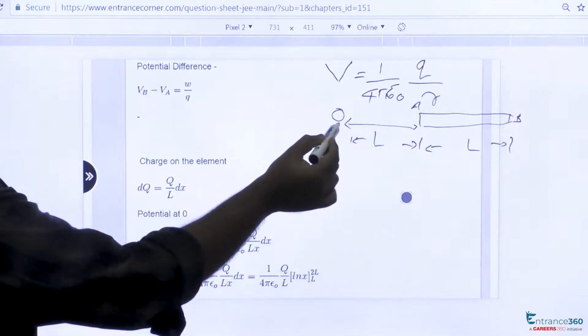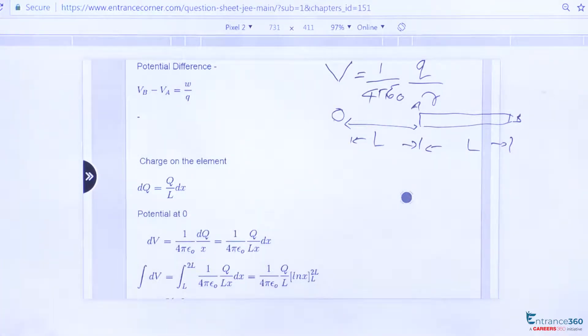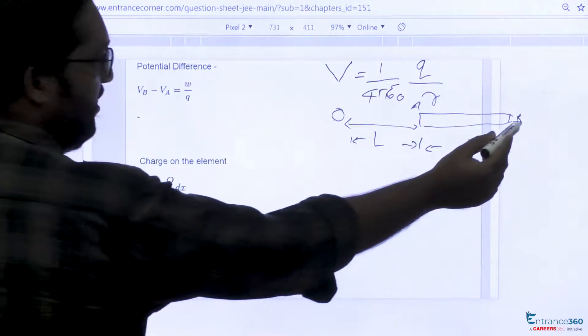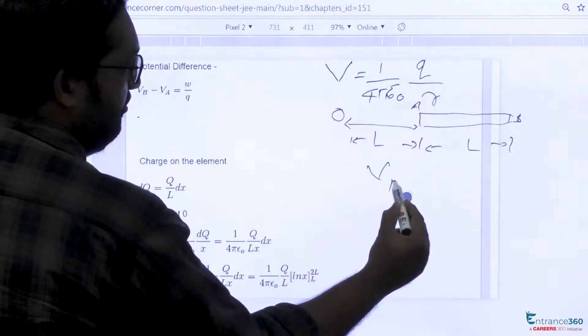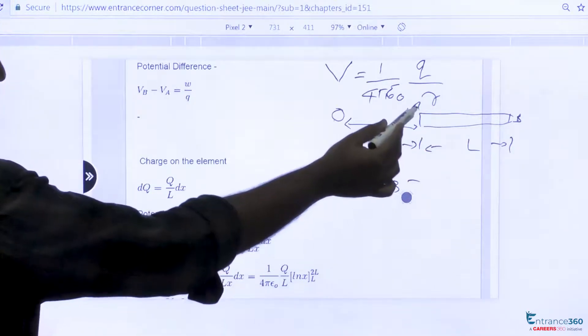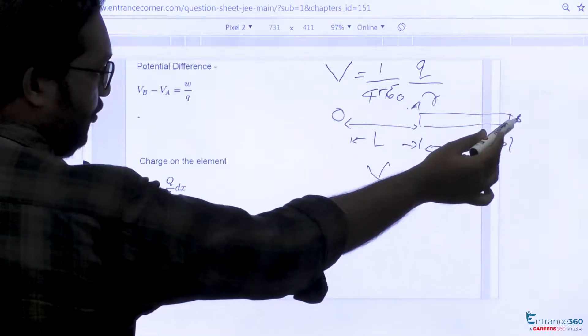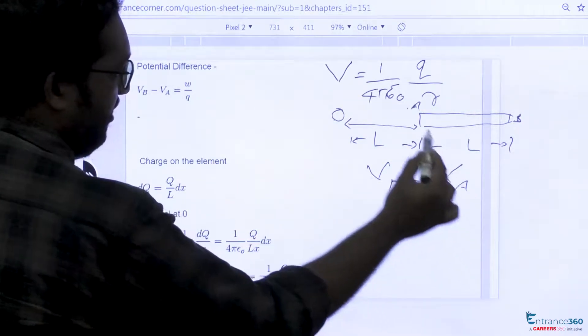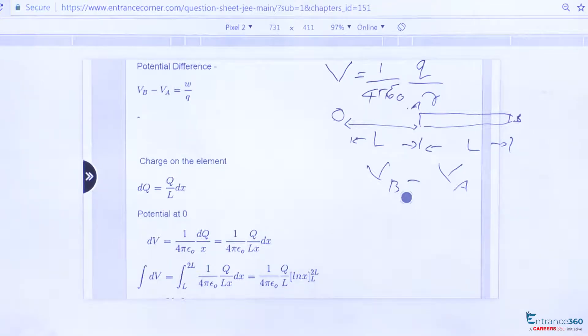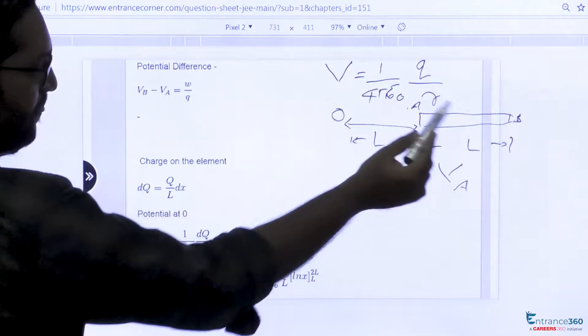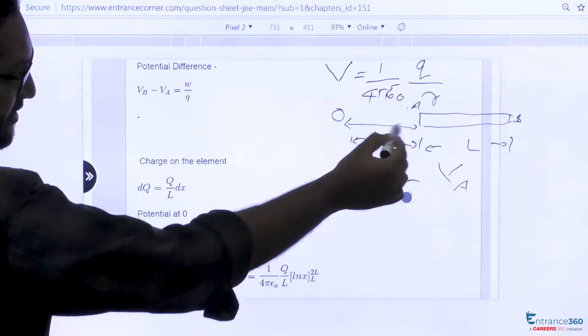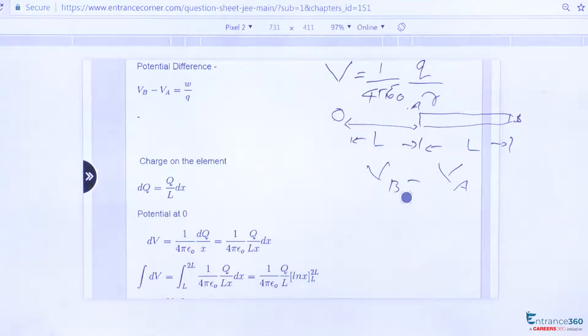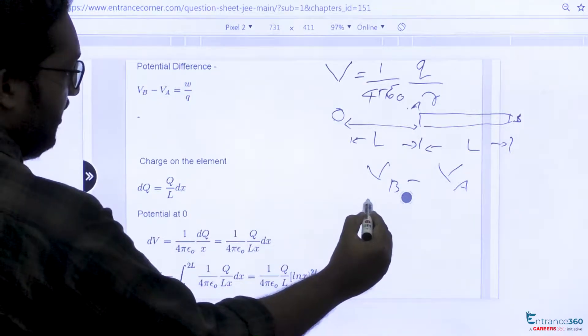So you have to find potential at O. Potential at O will be potential due to B at O minus potential due to A at O. So B is at a distance 2L from O and A is at a distance L from O.